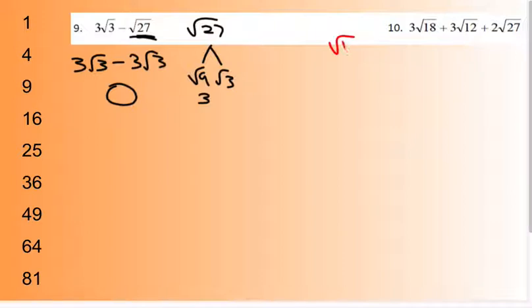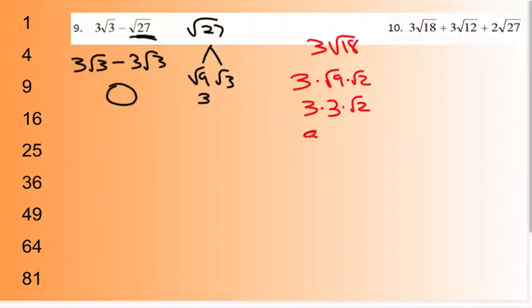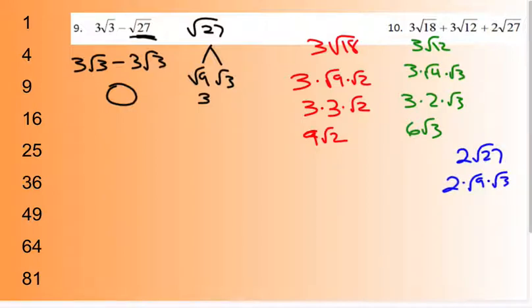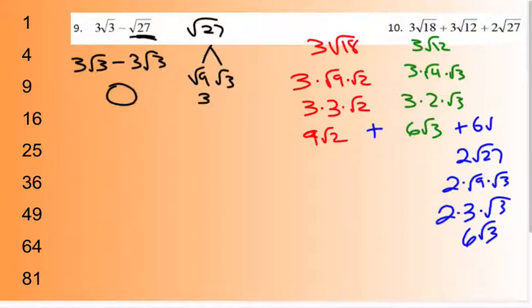For number 10, simplify all terms first. 3√18 = 3 times √9 times √2 = 3 times 3 times √2 = 9√2. Three square root of 12 = 3 times √4 times √3 = 3 times 2 times √3 = 6√3. Two square root of 27 = 2 times √9 times √3 = 2 times 3 times √3 = 6√3. So the answer is 9√2 plus 6√3 plus 6√3, which equals 9√2 plus 12√3.